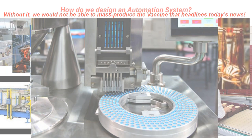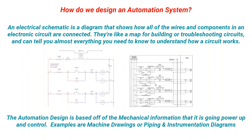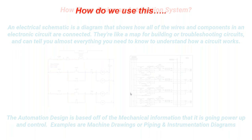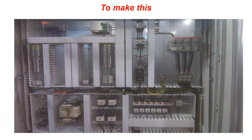So how do we design an automation system? We use an electrical schematic diagram, which shows where all the wires are going and how the circuit works. We use it to help troubleshoot and build. The automation design itself first has to be based on mechanical information — typically we'll start with a piping and instrumentation diagram, or machine drawings, to understand what we need to control. Then we create the electrical controls schematic.